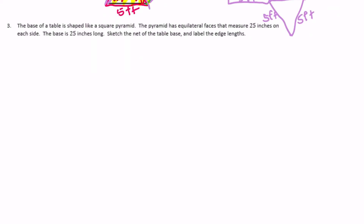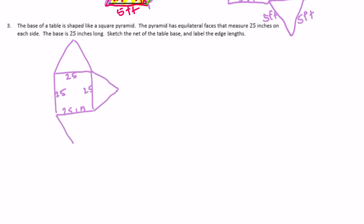Number three: the base of a table is shaped like a square pyramid, meaning the base is a square and all the sides fold up to form a pyramid. The pyramid has equilateral faces that measure 25 inches on each side, and the base is 25 inches long — so all sides are 25 inches. We put triangles on all sides of the square base, and those triangles fold up to make a square pyramid.